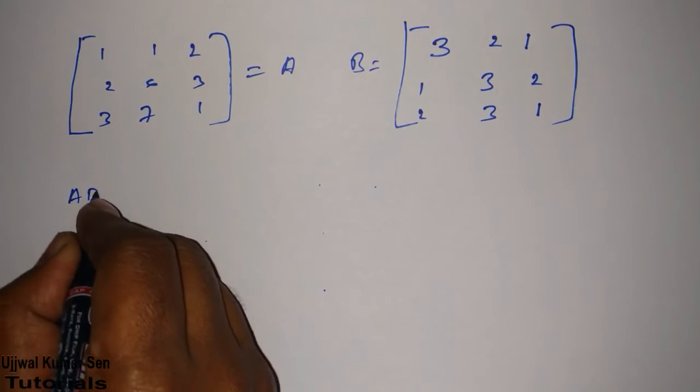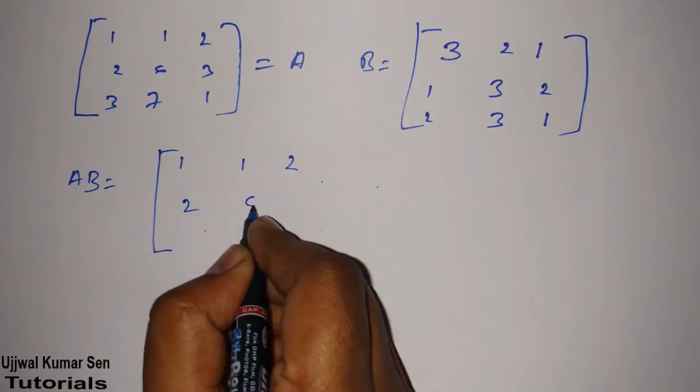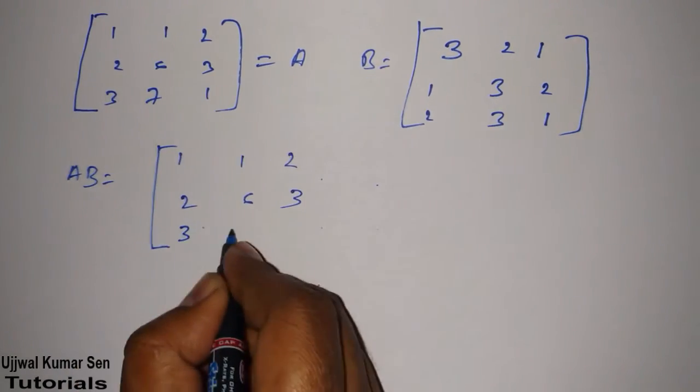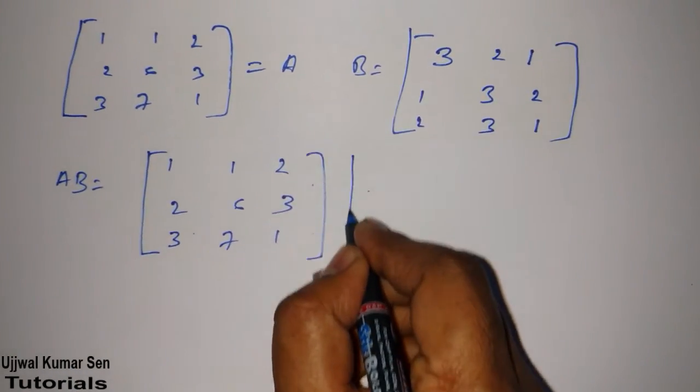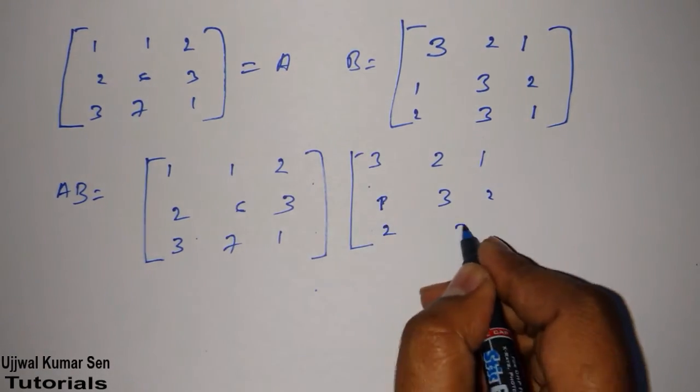Now, what we will do multiplication? AB is equal to 1, 1, 2, 2, 6, 3, 3, 7, 1, and 3, 2, 1, 1, 3, 2, 2, 3, 1.